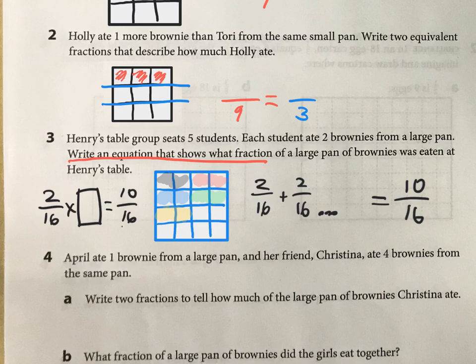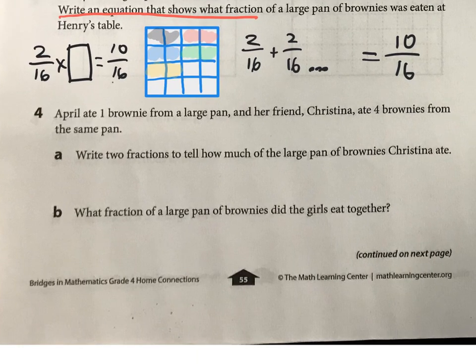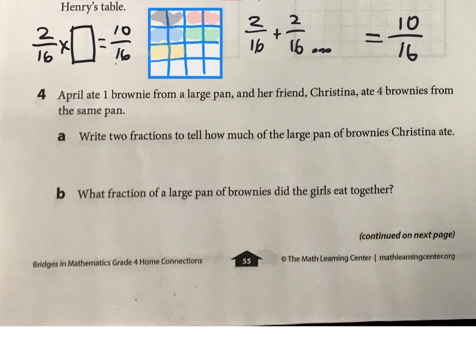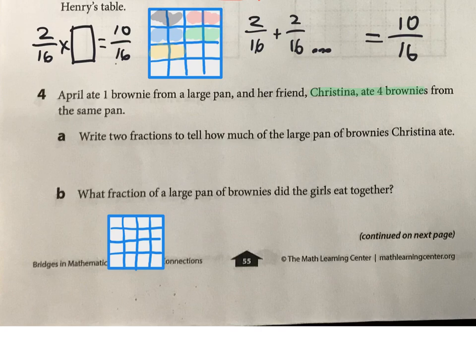And then down here we've got April and Christina, and again they're eating from the large pan. Christina had four, so Christina had that much. And April had one, so April she ate that much.